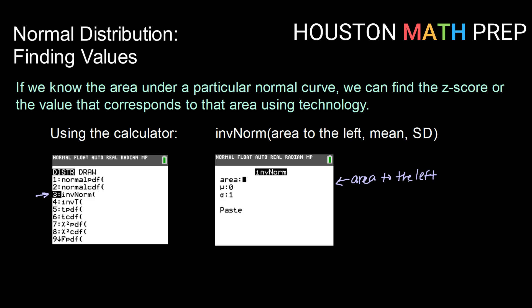Once you've filled those in, you can go hit paste. It will bring up this inverse norm, and then it will have those three values in there. You can go ahead and hit enter, and it will give you your value.